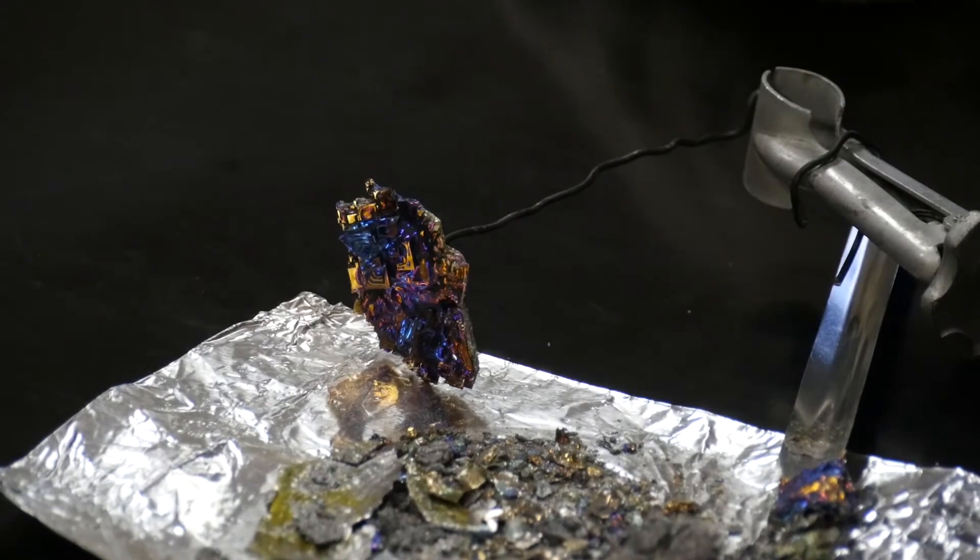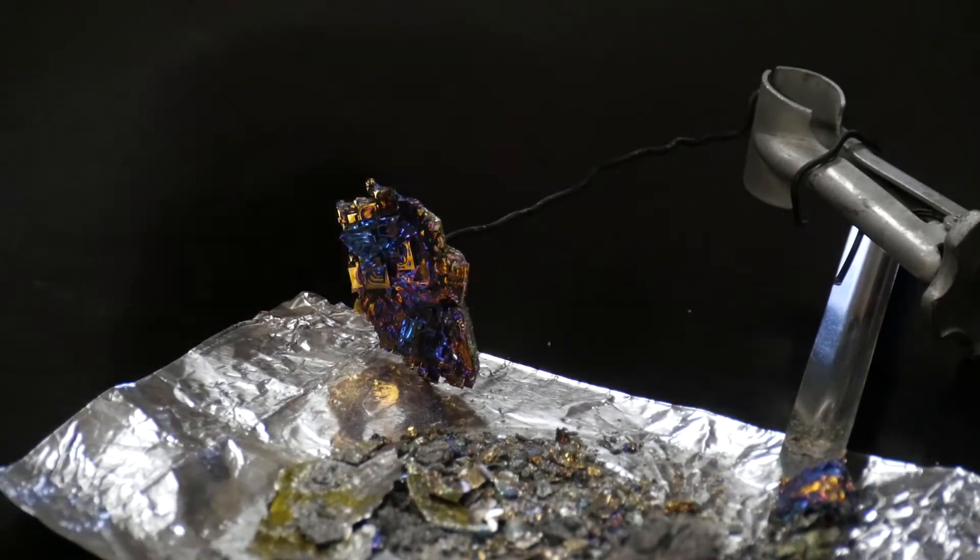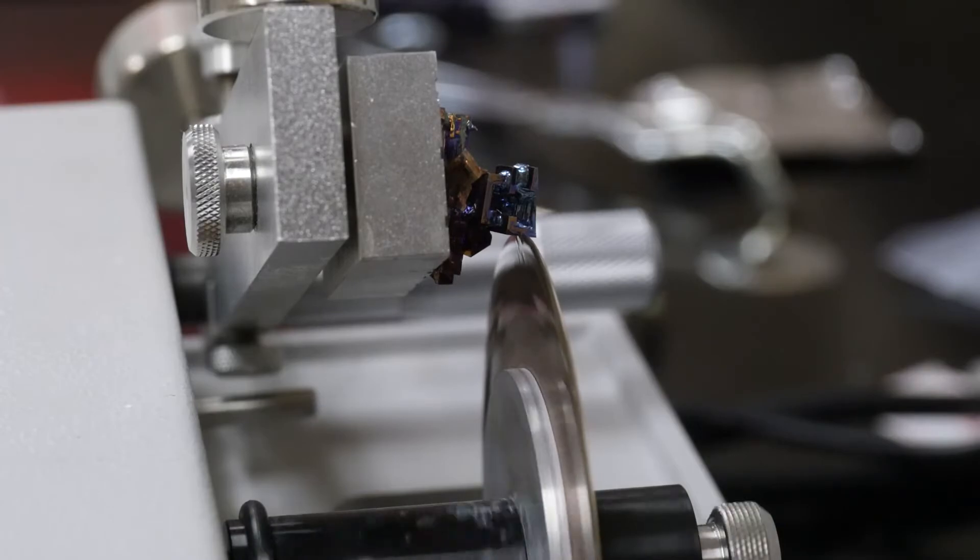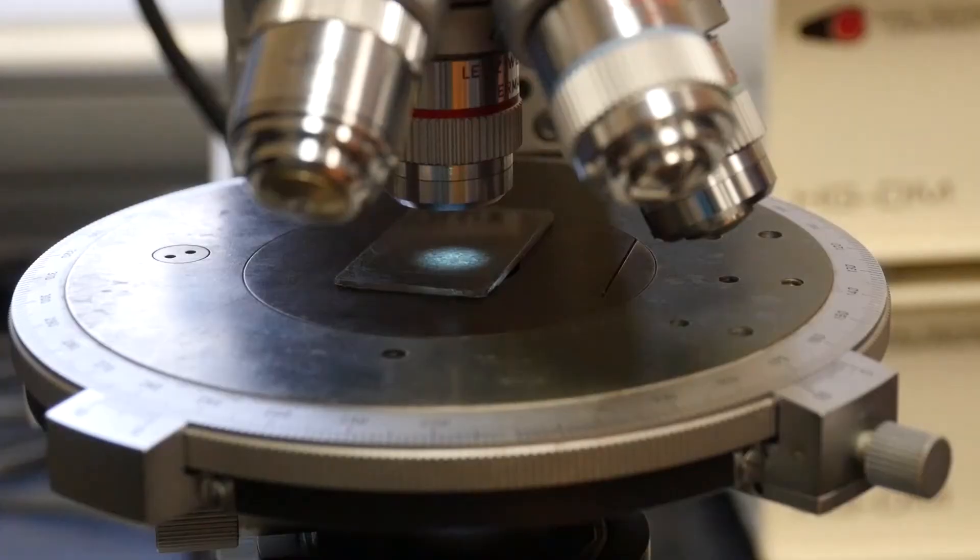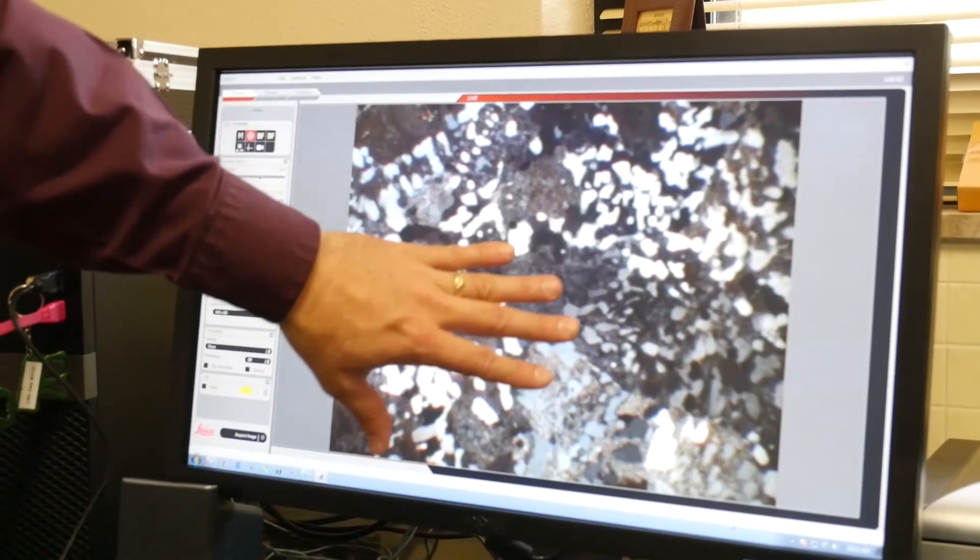And once we get a usable crystal, we will take that crystal over to the slow speed saw, section it, take those sections, scan them into the computer and compare those with pictures of some of the Wichita mountain granite groups that have a certain texture that we're looking for.